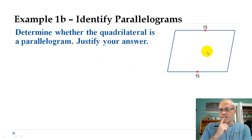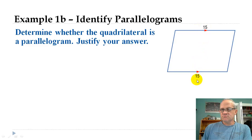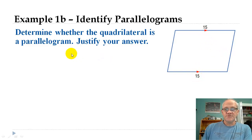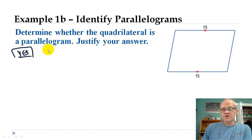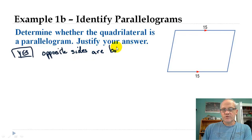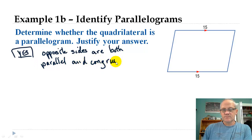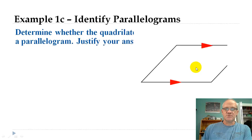Next — how about this? We know that the opposite sides are congruent: 15 and 15. We don't know anything about these other sides, but we also know these are parallel, and that is one of our tests. So we can also say yes, this is a parallelogram because the opposite sides are both parallel and congruent.